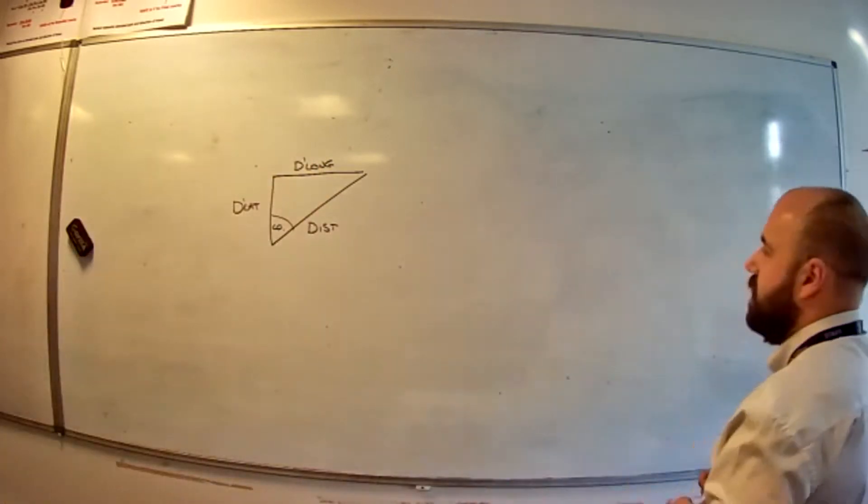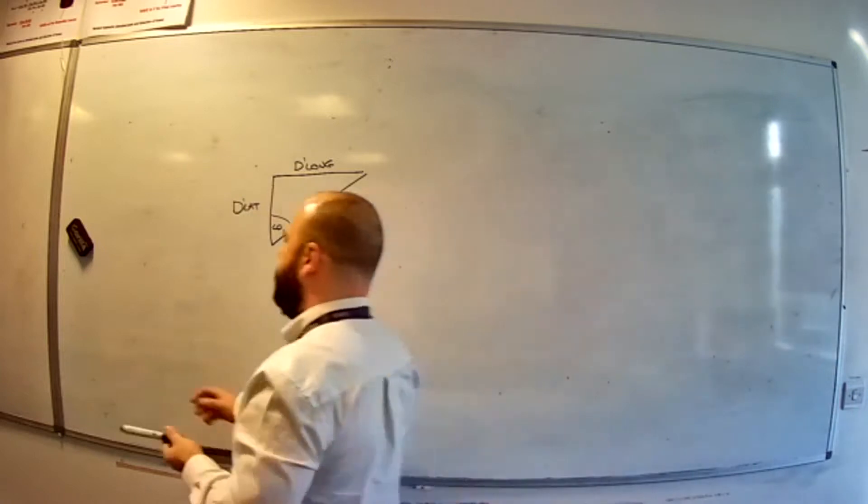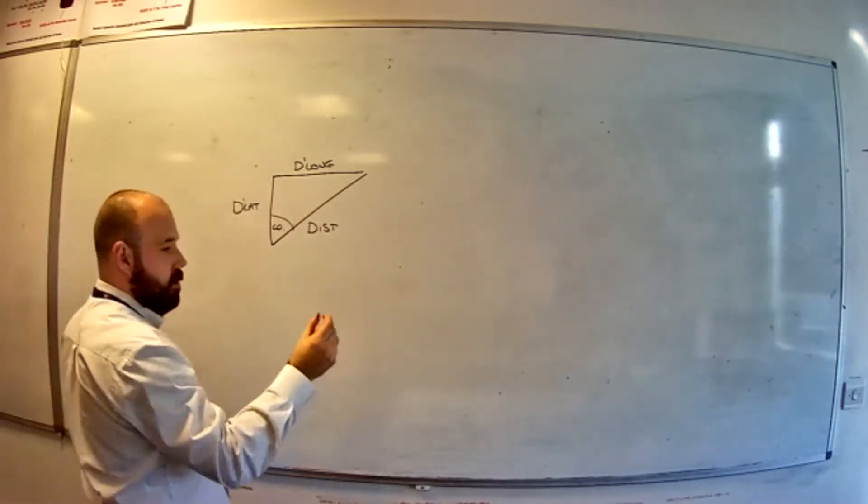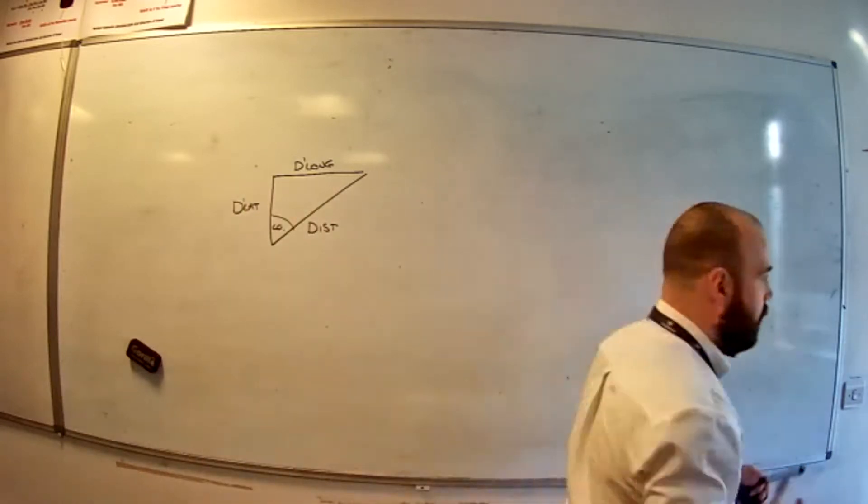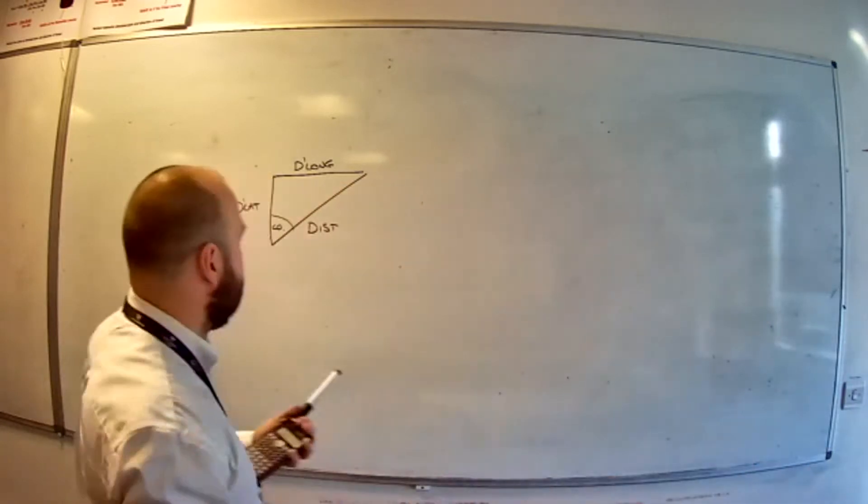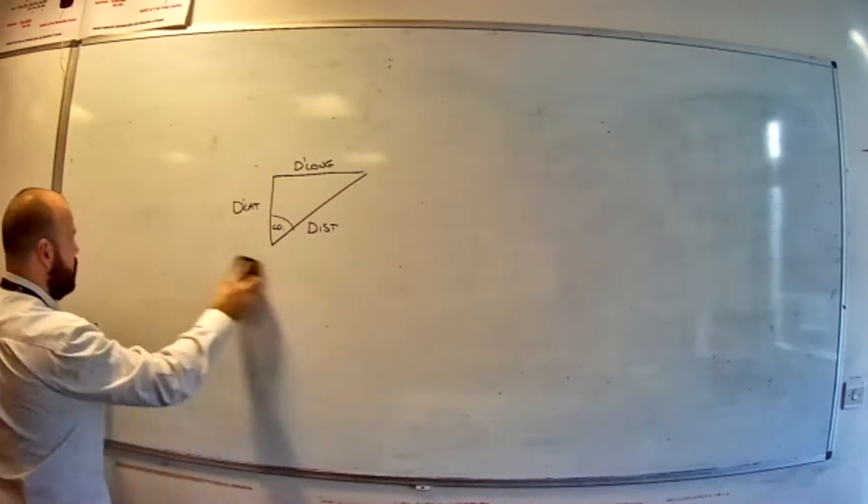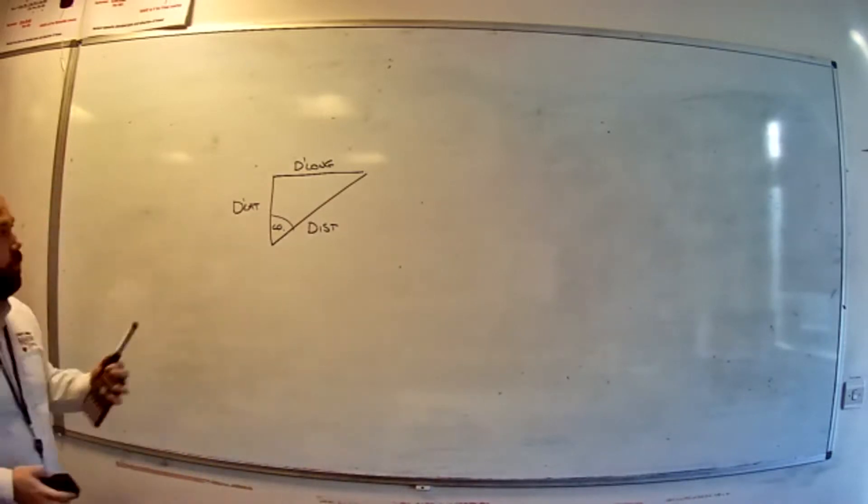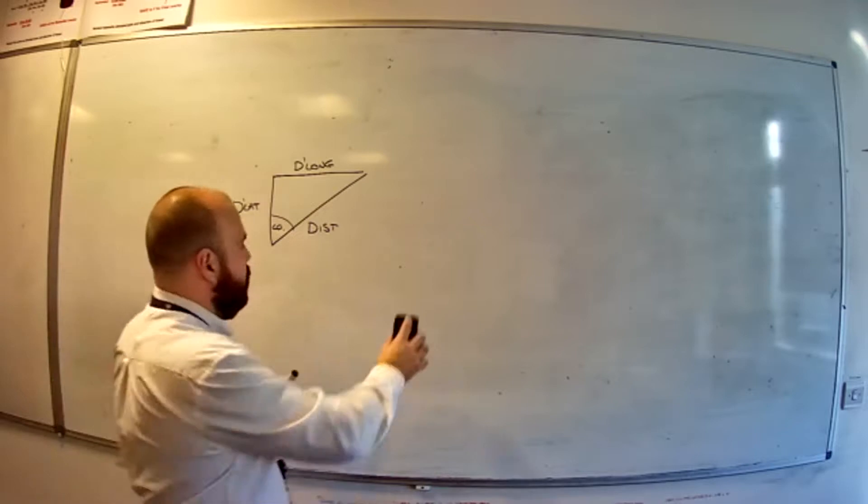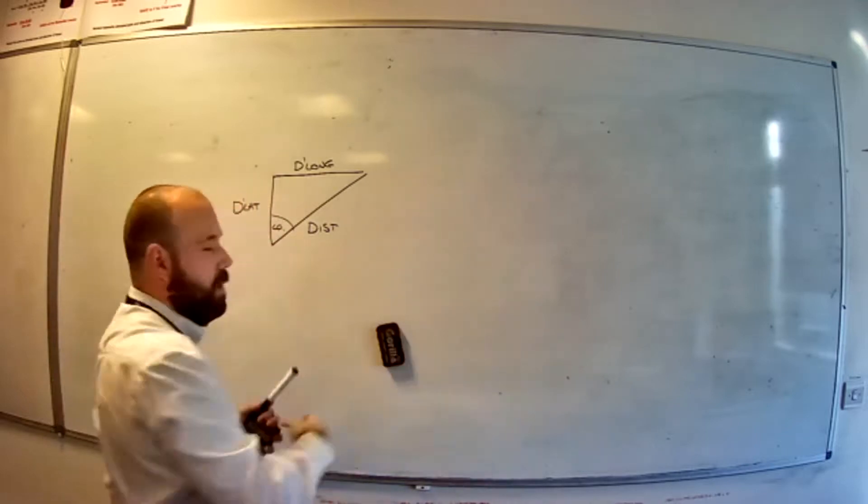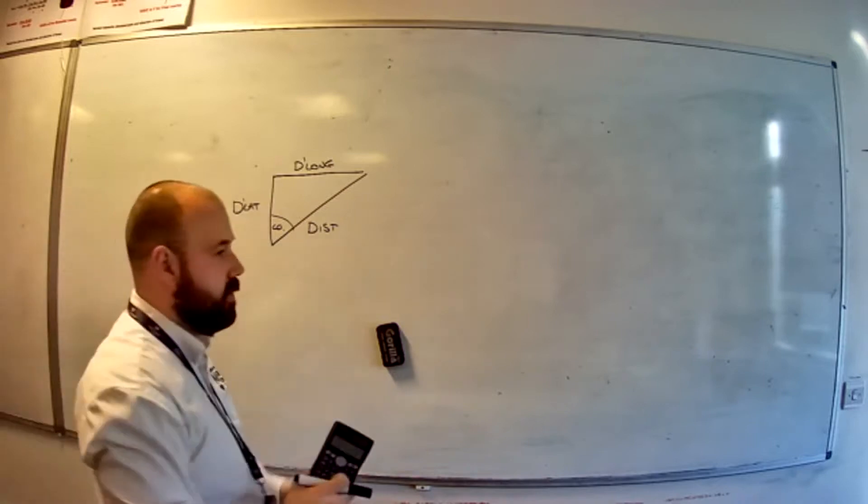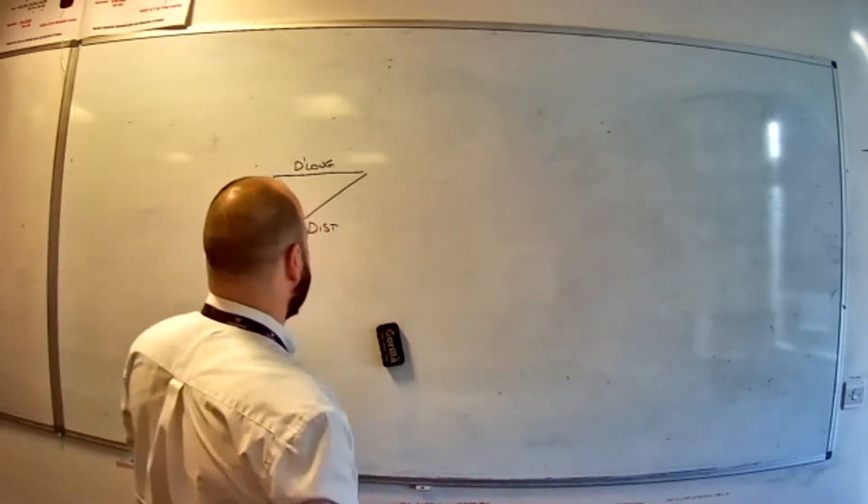The problem we have is DLong changes distance with latitude. At the pole, a degree of DLong is a tiny amount. At the equator, a degree of DLong is also a degree of distance. So by the time we change the units, rounding errors come in and things like that. And because of the method we're going to use to do it, it's not going to be very accurate. That's why we go over 600 miles.